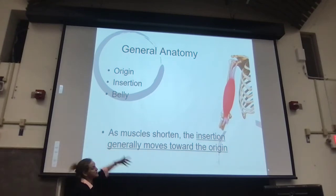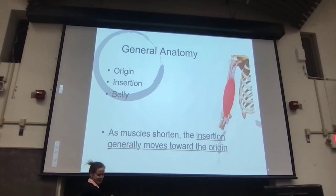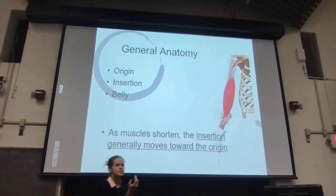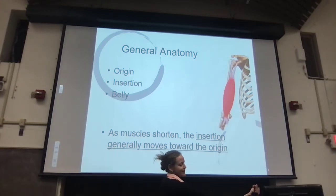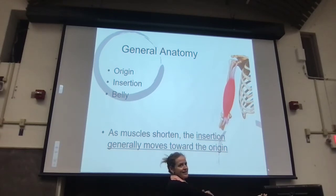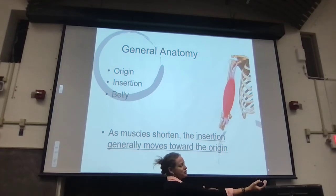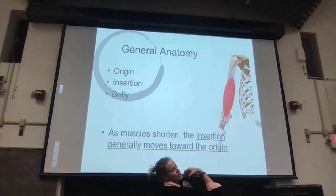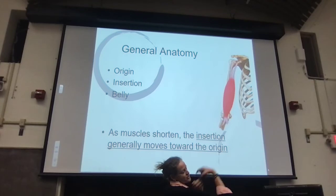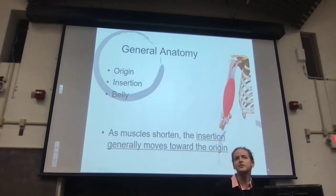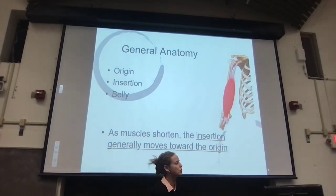Generally, when a muscle contracts, the insertion end — the distal end — moves more towards the origin. So it's not necessarily always 50-50, but in my biceps brachii, this end is moving more. The insertion moves towards the origin.